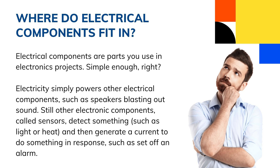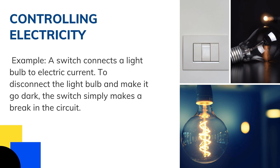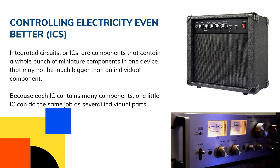In this part you meet some basic electrical components, and in the latter chapters we will provide much more detail. Electrical components can actually control electricity. For example, a switch connects a light bulb to electric current; to disconnect the light bulb and make it go dark, the switch simply makes a break in the circuit. Some parts that control electricity are resistors, capacitors, diodes, and transistors.